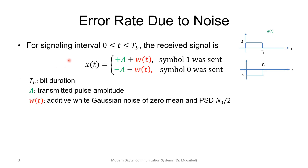Error rate due to noise — let's take the example for signaling to be polar, which means we have plus A for symbol 1 and minus A for symbol 0. That's for the bit duration of TB, and we'll assume that we have noise. A is the amplitude, TB is the bit duration, and W(T) is the additive white Gaussian noise with zero mean and power spectral density of N₀ over 2.